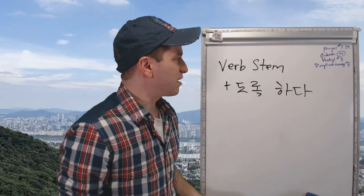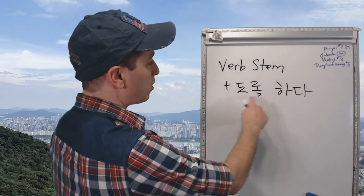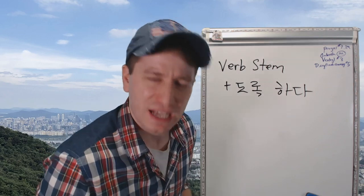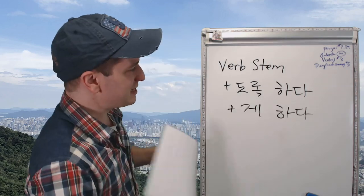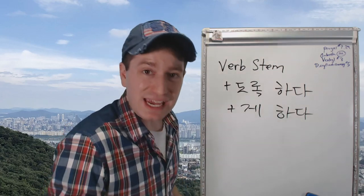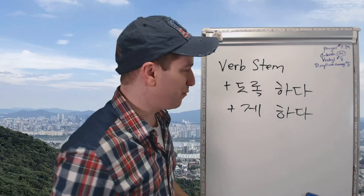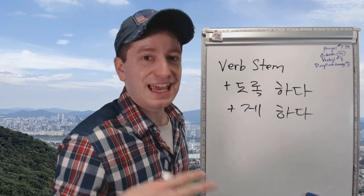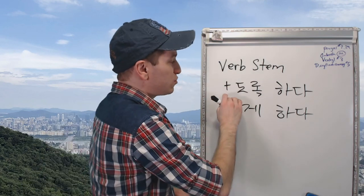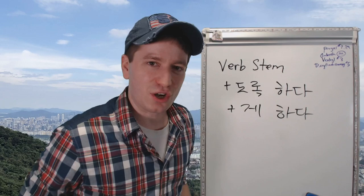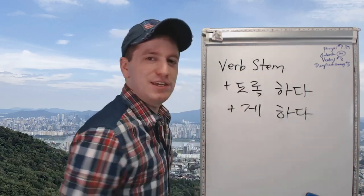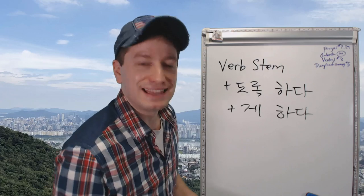Now we're going to talk about the next form: 도록하다. You take a verb stem and attach 도록, then follow with the verb 하다. You can say 도록하다 in the same way as 게하다 — meaning 'to make' and 'to let.' You can say 청소하게 했어요, 'I made someone do the cleaning,' or 청소하도록 했어요, 'I made it so that something happened.' Both can be used to mean make and let.